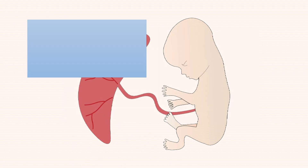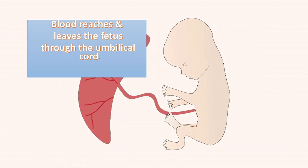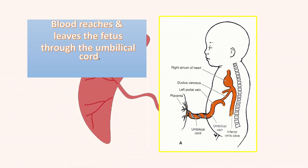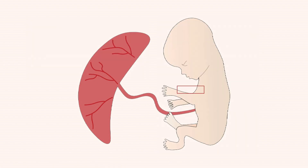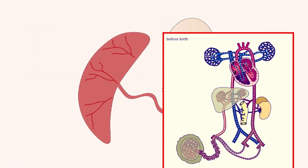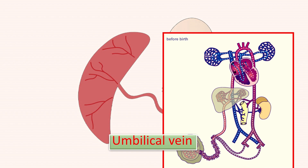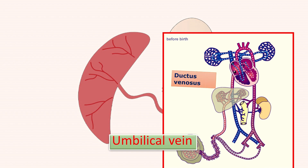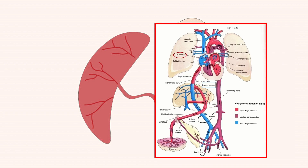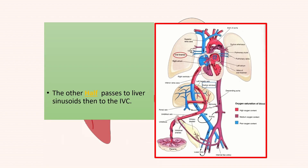Blood reaches and leaves the fetus through the umbilical cord. Highly oxygenated blood passes from the placenta through the umbilical vein. Half of this blood reaches the inferior vena cava through the ductus venosus. The other half passes to the liver sinusoids, then to the inferior vena cava.